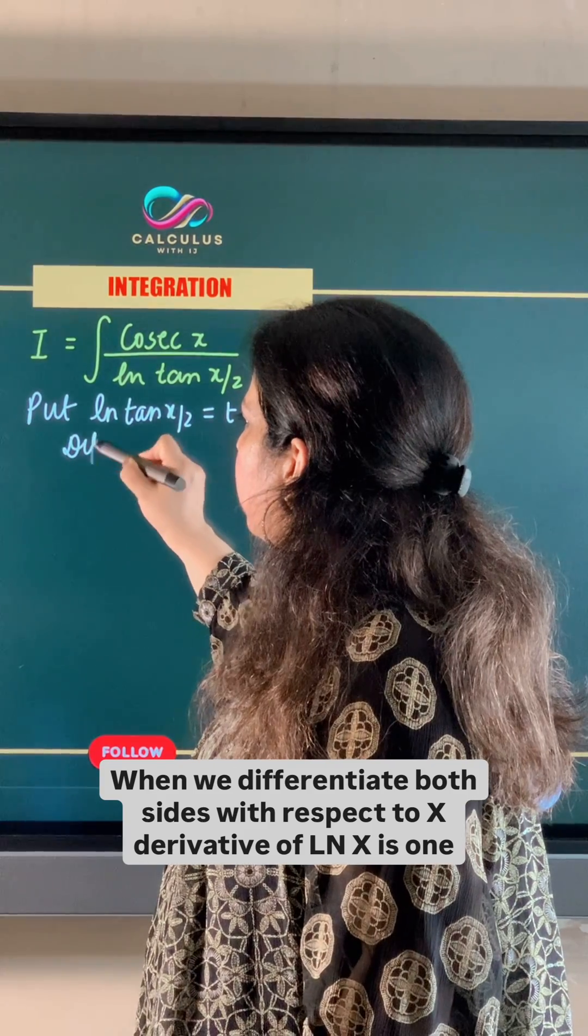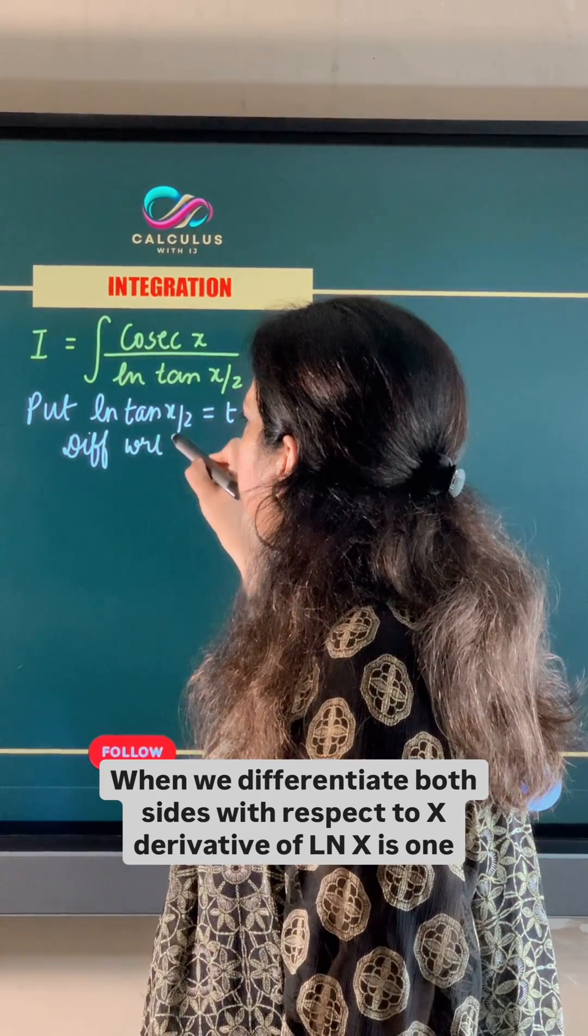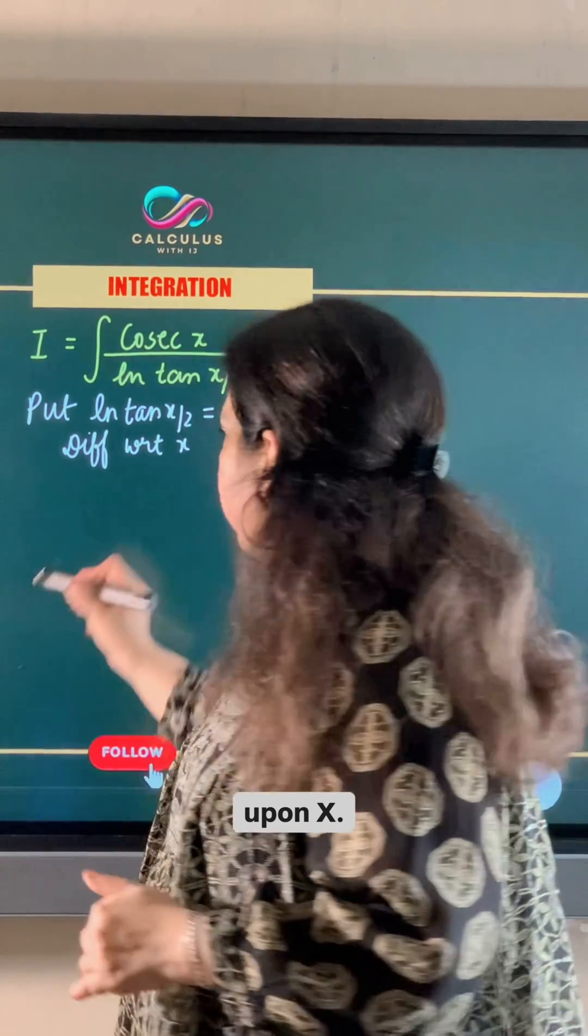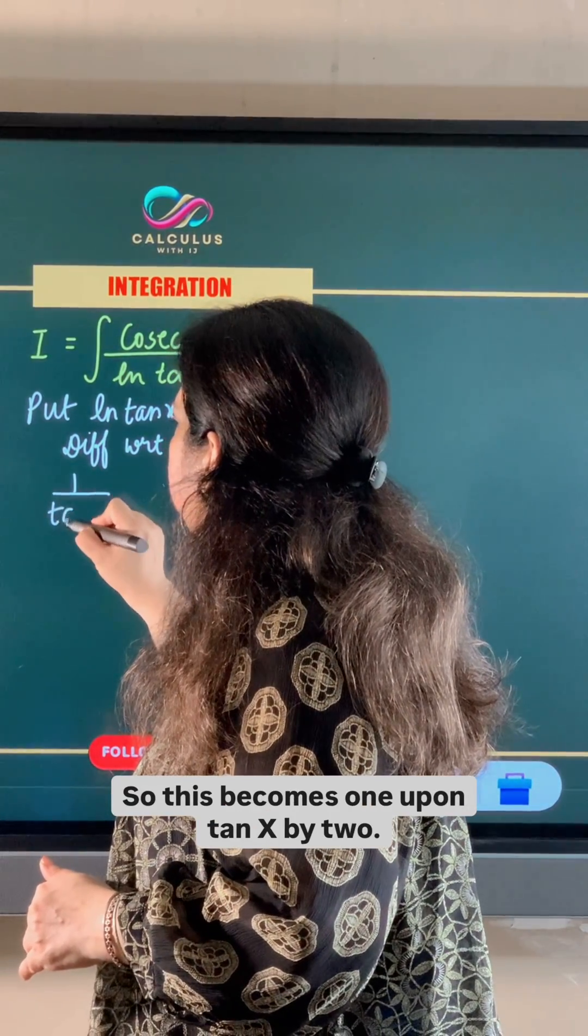When we differentiate both sides with respect to x, derivative of ln x is 1 upon x. So this becomes 1 upon tan x by 2.